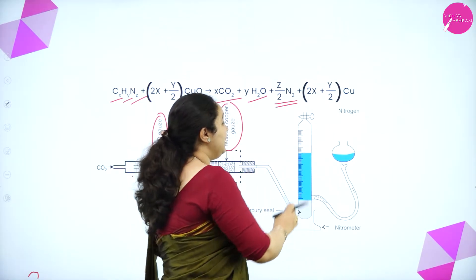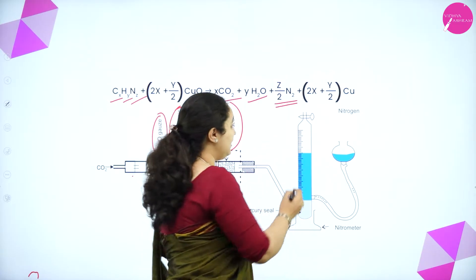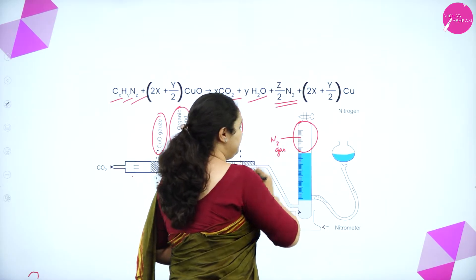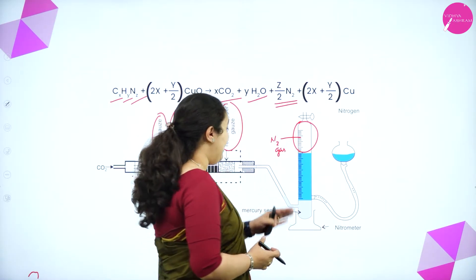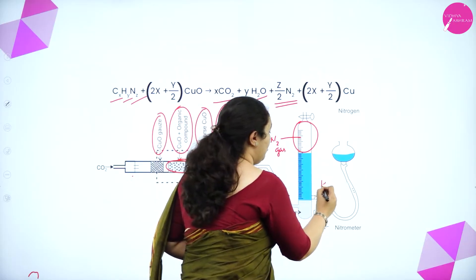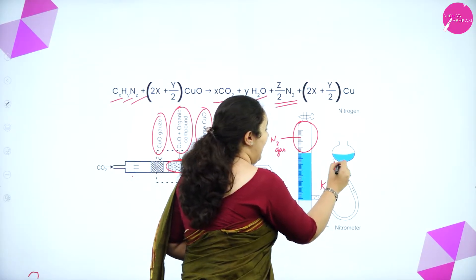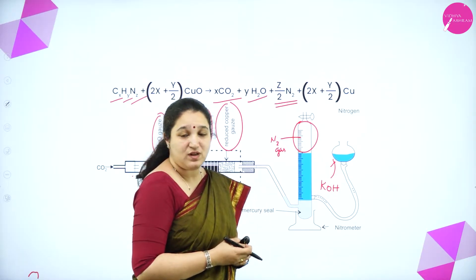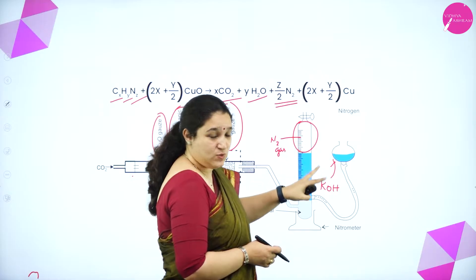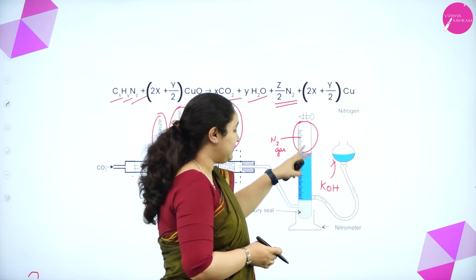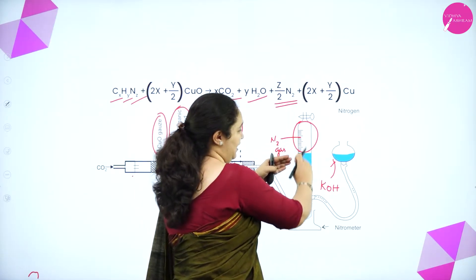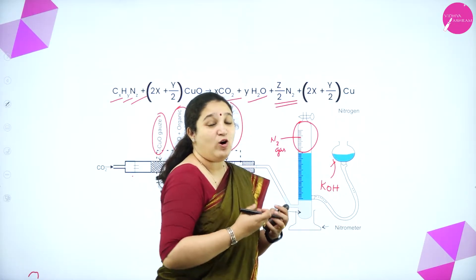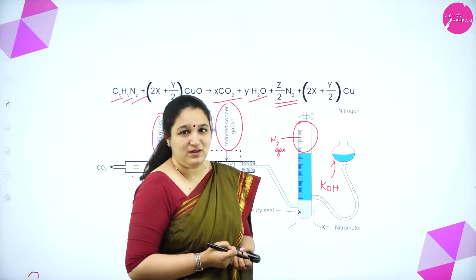All these gases pass through the tube and go into the graduated tube. In the graduated tube, nitrogen does not react with anything, so all the nitrogen gas is collected there. We have potassium hydroxide KOH in the setup, and KOH will absorb all the carbon dioxide which is formed. Nitrogen is collected in the graduated tube, displacing the KOH solution.